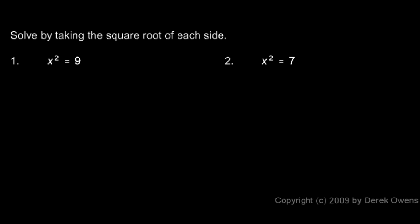In the first one, x squared equals 9, so I just take the square root of the left side, that's the square root of x squared, and the square root of the right side is the square root of 9.